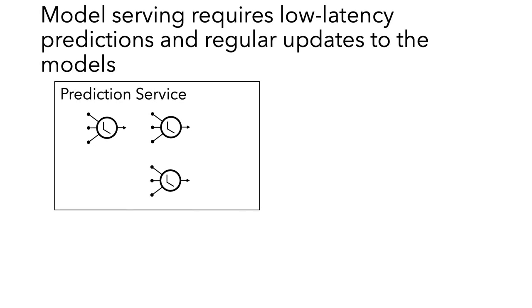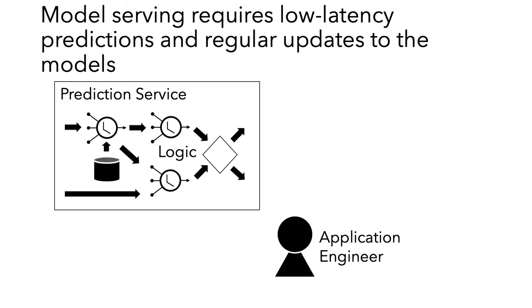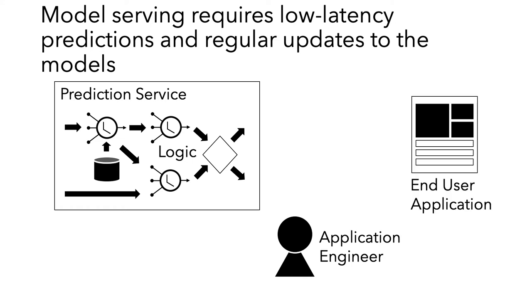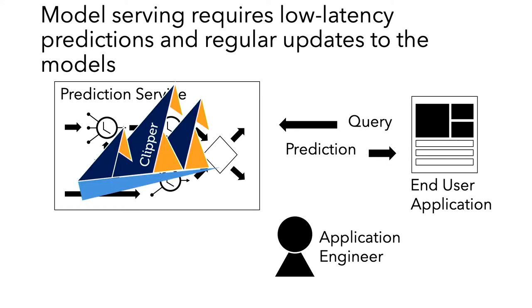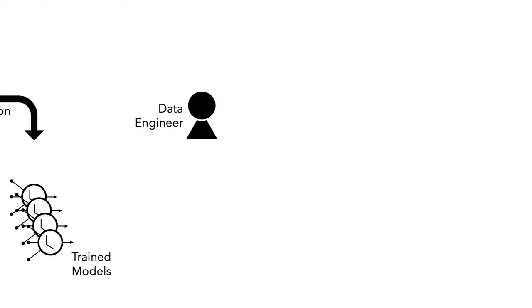Finally, we take some collection of these models and put them out into production. Model serving requires low latency predictions and regular updates to the models. An application engineer is responsible for connecting the logic that composes the experiments, and end-user applications query the prediction-serving system to receive predictions. Clipper, for example, specializes in this domain. But machine learning models are perishable items — over time, due to distribution shift, schema changes, and so on, the prediction power of the model will decline, and we'll have to step back and retrain a new model.